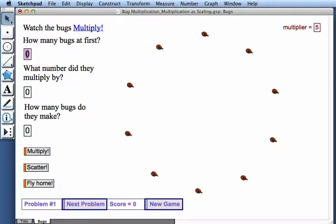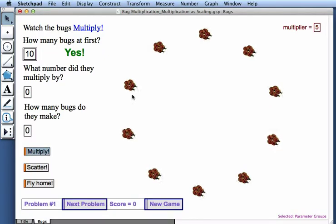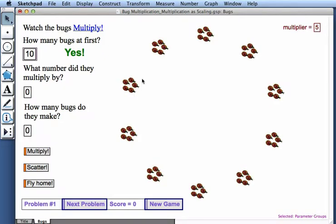I'll enter 10 into this box and I'll click outside the box. Now I'm going to press Multiply. Watch what happens with each bug. Each bug splits into 5 bugs. So what number did they multiply by? 5.